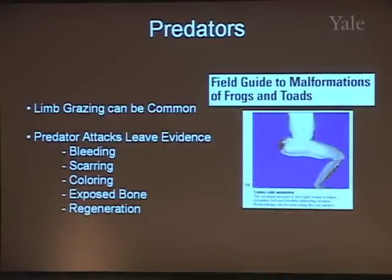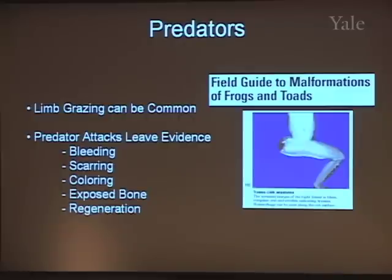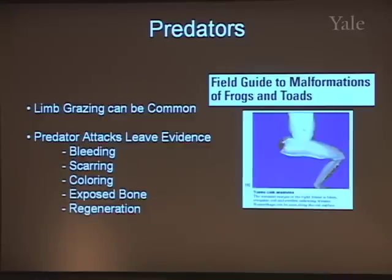I'm going to step through each one of these four ideas and talk about each one and why it may or may not make sense. First, predators. Why do predators potentially make sense as a cause? It turns out that something called limb grazing is common. You've got all these baby frogs swimming around, and while they're still swimming they've got a tail to swim with but also have their legs developing. If a predator comes along — maybe a fish, maybe another frog, maybe some kind of insect — one of the easiest handles to grab onto when trying to eat that tadpole is the developing limb, once it gets big enough. Sometimes the predator eats the limb and doesn't get the rest of the animal.